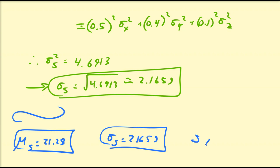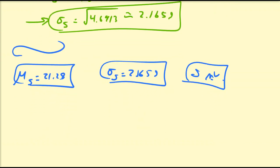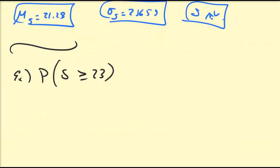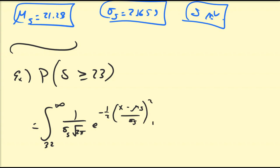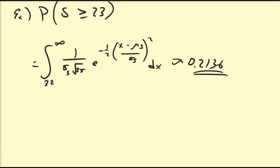So we have our mean mu_S = 21.28 and standard deviation sigma_S = 2.1659. Since S is a normal random variable, we can use the normal distribution and integrals to solve problems on S. For example, what is the probability that your exercise value score is larger than 23? This is the integral from 23 to infinity of 1 over sigma_S times the square root of 2π, times e to the minus one-half of (x minus mu_S) over sigma_S, all squared, dx. Once you work out that integral, it's approximately equal to 0.2136.